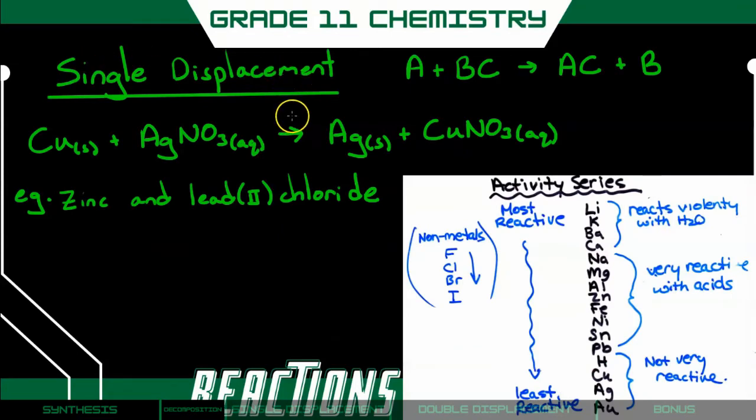Alright, moving on, we're going to look at a single displacement reaction. So in this case, we have something simple, and then something complex. But in this complex portion, one of those parts are going to move and combine with the simple part instead. Now this isn't always going to happen. Let's look at an example. Here we have copper and silver nitrate. And as you can see, the nitrate then moves over to be with the copper instead of the silver, and we get silver by itself.